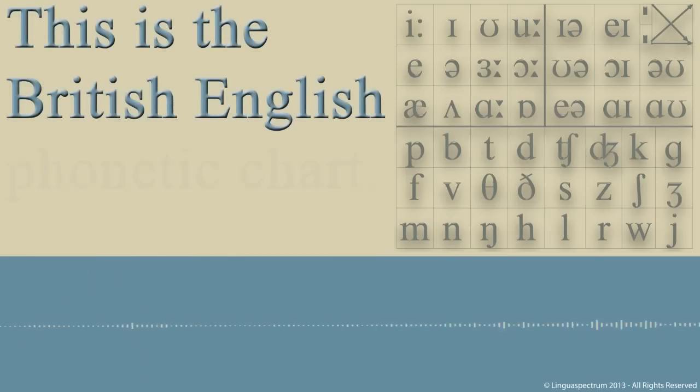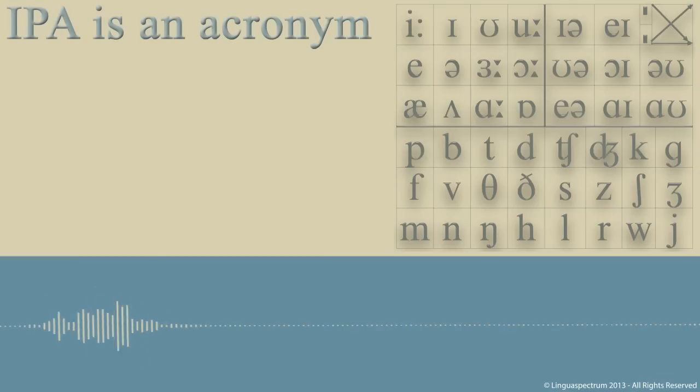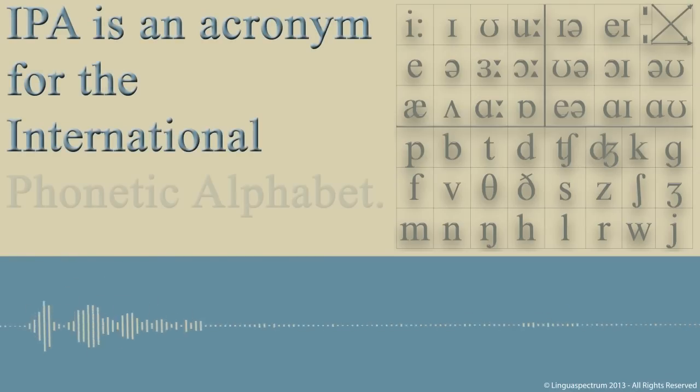This is the British English Phonetic Chart. It's also called the IPA Chart. IPA is an acronym for the International Phonetic Alphabet.